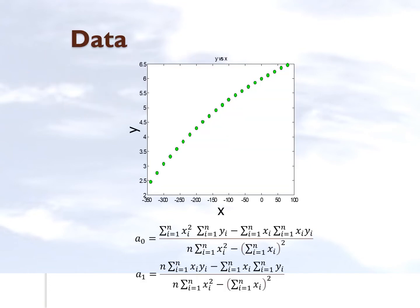For example, somebody gives you y versus x data and they want you to regress it to a straight line. All you need to do is put in the values of x and y into these two formulas and be able to find a0 and a1, which are the intercept and the slope of that particular straight line.